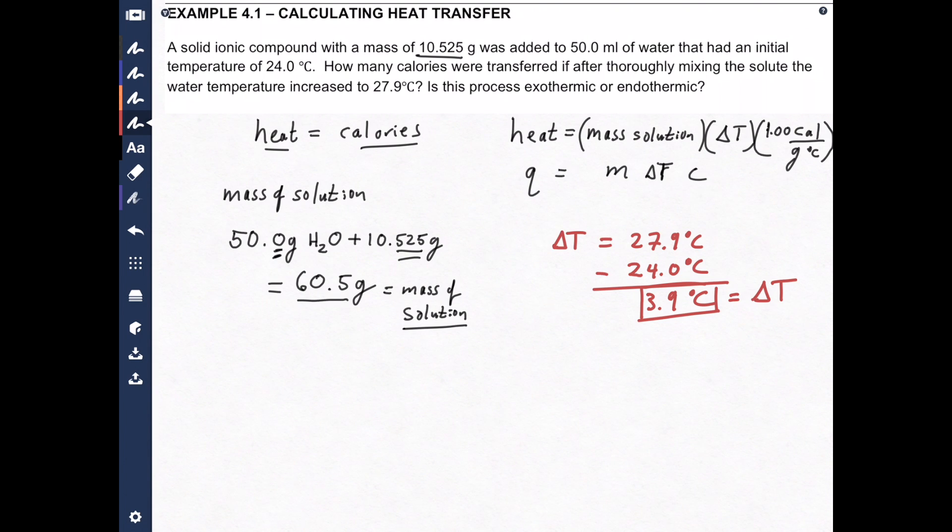So first we calculated the mass of solution, then we calculated the change in temperature. Now all we have to do is take our formula for Q, which is heat, or calories, is mass multiplied by delta T, multiplied by C, which is the heat capacity, which we wrote down right over here.